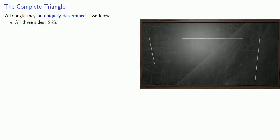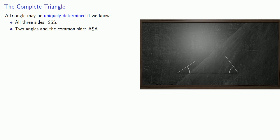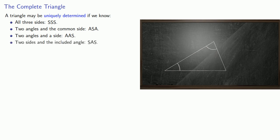A triangle may be uniquely determined if we know all three sides, SSS, two angles and the common side, angle-side-angle or ASA, two angles and a side, angle-angle-side or AAS, and two sides and the included angle, side-angle-side or SAS.